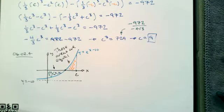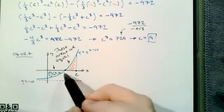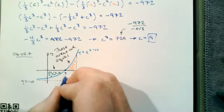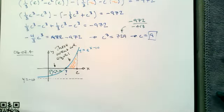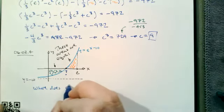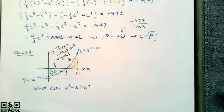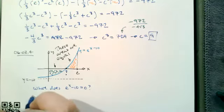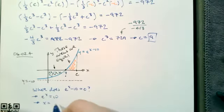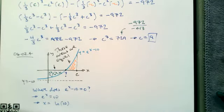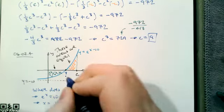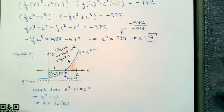Let's figure out where this point is — where does e to the x minus 10 cross the x-axis? So e to the x minus 10 equals zero tells us that e to the x equals 10, and so that happens when x equals the natural log of 10. Now we know where that crossing point is. Now that we know this crosses at natural log of 10, we can find the green area.